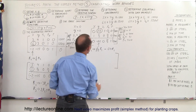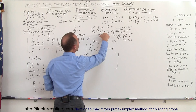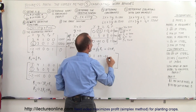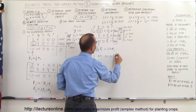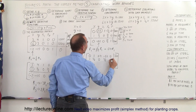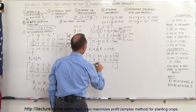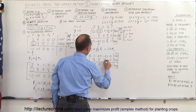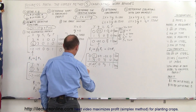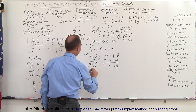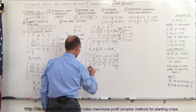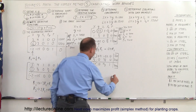Multiplying row 1 by 0.4 gives: 0, 1, 0.4, negative 0.2, 0, 160. Row 2 stays as 1, 0.5, 0, 1/6, 0, 200. Row 3 stays as 0, negative 0.5, 0, 1/3, 1, 400. Now we eliminate the 0.5 in row 2 and the negative 0.5 in row 3 using the pivot. Replace R2 with negative 1.5 times R1 plus R2, and replace R3 with positive 0.5 times R1 plus R3.